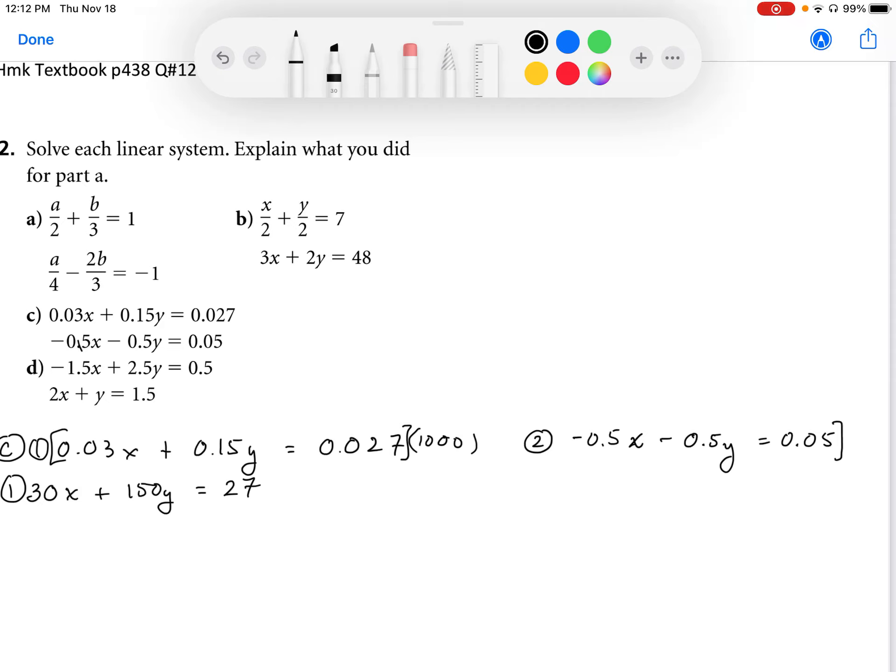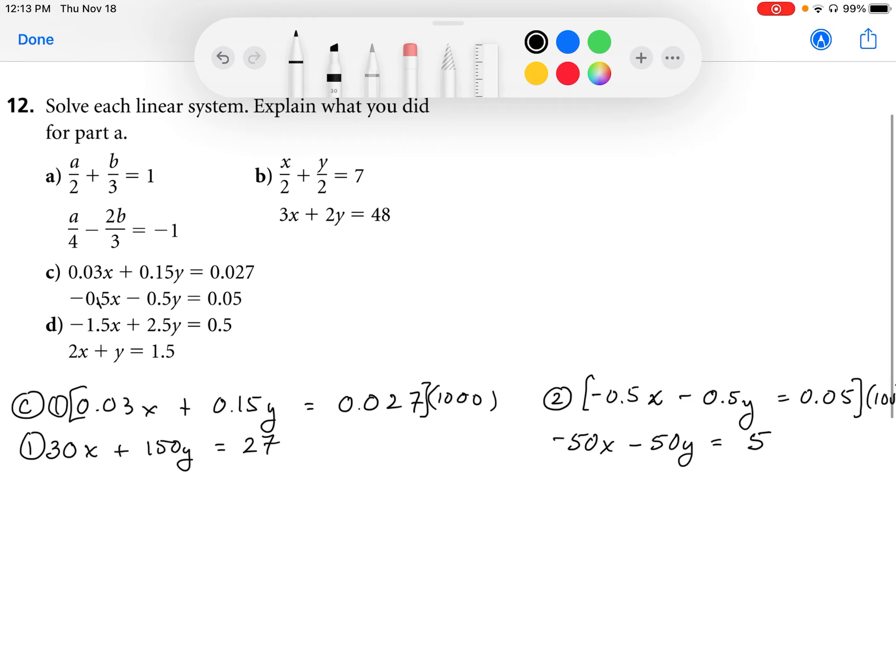So I'm just going to take this and multiply everything by 100. There's two decimal places I want to get rid of, so I'm going to multiply by 100. This is going to give me negative 50x. We have to be careful of our signs. Negative 50y, so 0.5 times 100 is negative 50. And then times that by 100, 0.05 times 100 equals 5. So there's my equation.